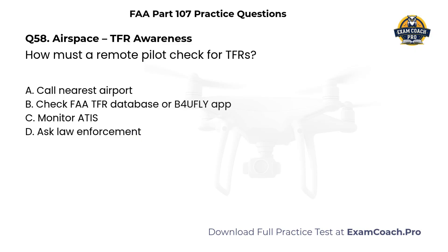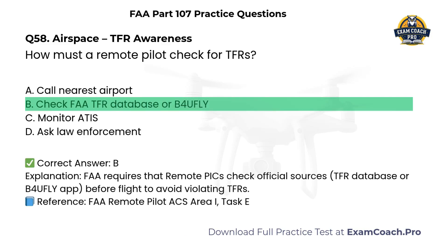TFR Awareness. How must a remote pilot check for temporary flight restrictions? A. Call nearest airport. B. Check FAA TFR database or before-you-fly app. C. Monitor ATIS. D. Ask law enforcement. Correct answer: B. Check FAA TFR database or before-you-fly app. The FAA requires that remote PICs check official sources before flight to avoid violating TFRs.